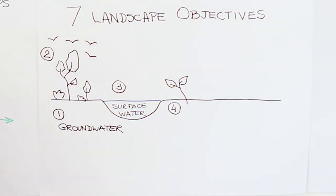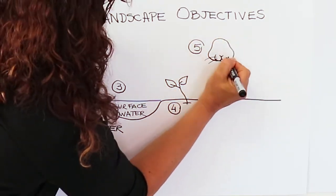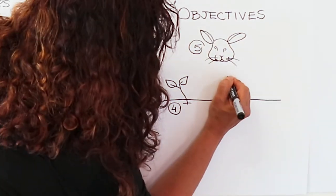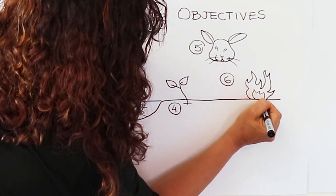The fifth one is to minimize the impacts of pest animals, plants and diseases. The sixth is about managing fire in our landscapes. And the seventh is to adapt to and mitigate climate change.